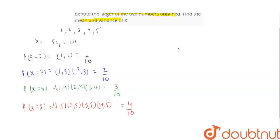So, our probability distribution becomes xi, fi. Xi is 2, 3, 4 and 5. And fi is 1 by 10, 2 by 10, 3 by 10 and 4 by 10.